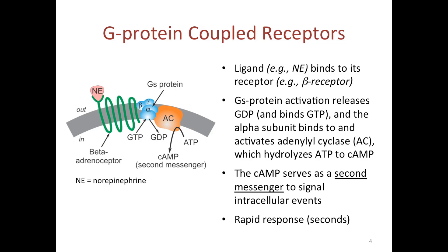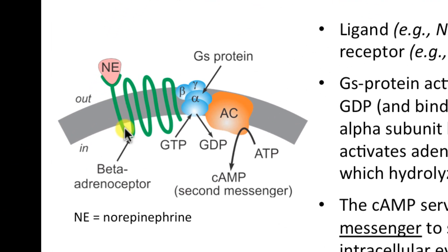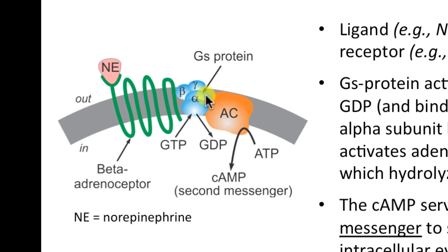A second type of receptor is what we call the G-protein-coupled receptor. In this particular illustration, I am showing a beta-adrenergic receptor, such as found in the heart, that is coupled to a G-S protein. The ligand that binds and activates this receptor in the heart would be norepinephrine, the neurotransmitter from sympathetic nerves. When it binds to the external surface of the beta-adrenergic receptor, that causes a conformational change leading to dissociation of this complex of G-S protein subunits, triggered by binding of GTP to the alpha subunit and the release of GDP.